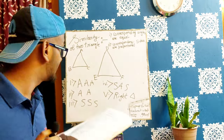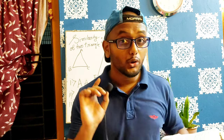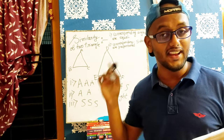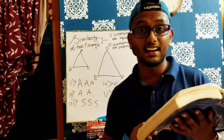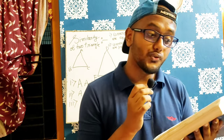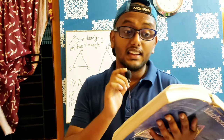This is the angle-angle (AA) similarity criterion: if two angles of one triangle are respectively equal to two angles of another triangle, then the two triangles are similar. For SSS similarity: if the corresponding sides of two triangles are proportional, then their corresponding angles are equal, hence the two triangles are similar.